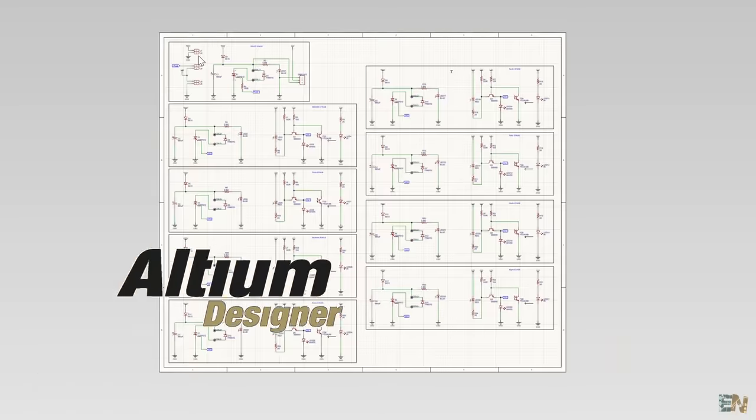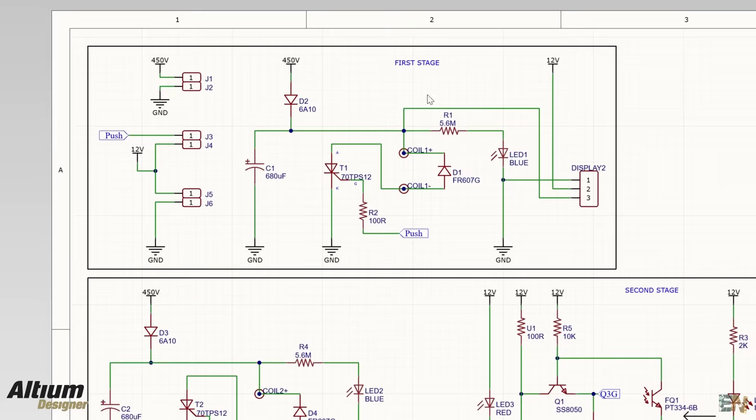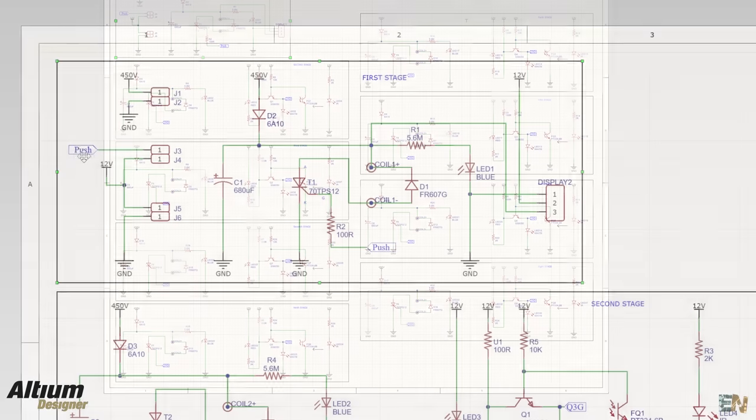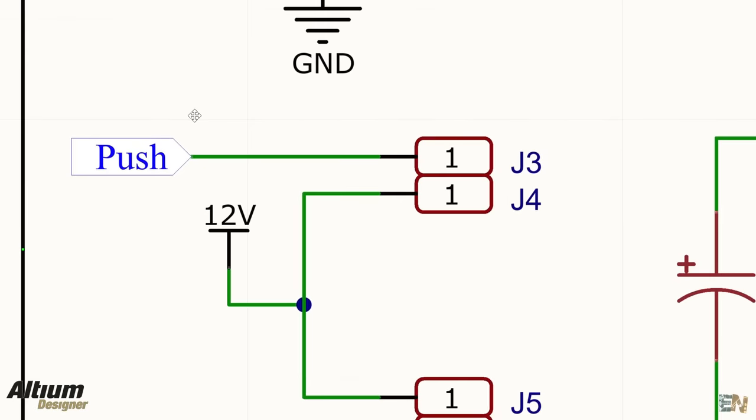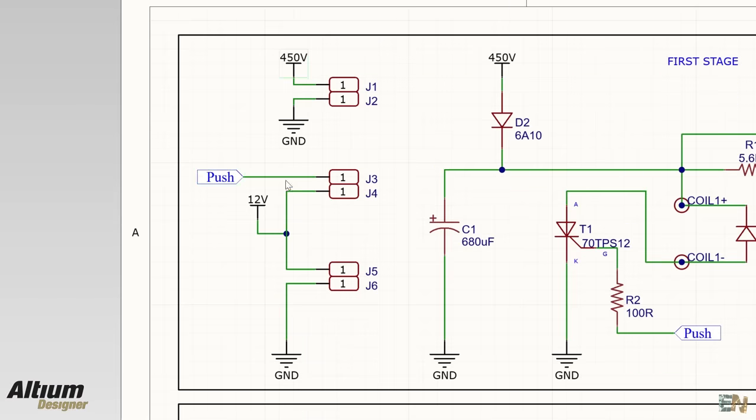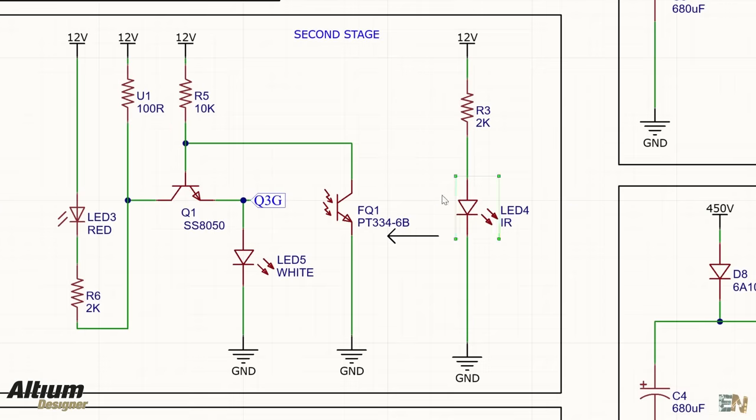This is the schematic for this project. Basically we have the first stage which is a bit different and then the second to the 10th stage, it's all the same. The first stage is a bit different because it has the push button activation, the 450V input and the 12V input. The rest of the stages are using infrared light to trigger the magnetic field so they don't need the push button part.